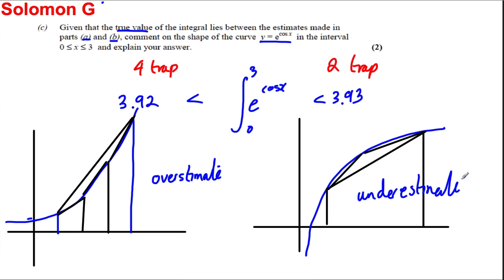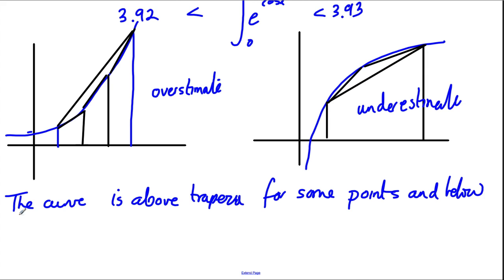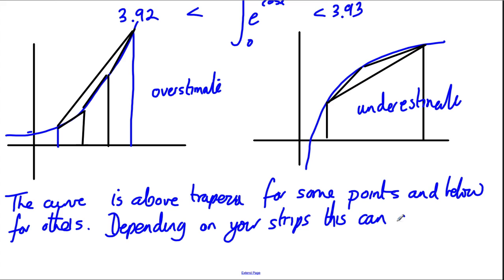Now, for this integral, using more trapezia to actually not necessarily be underneath the value, having been over it, potentially, it seems like there must be, or the curve is above the trapezia for some points and below for others. And depending on your strips, this can cause an over or an underestimate.